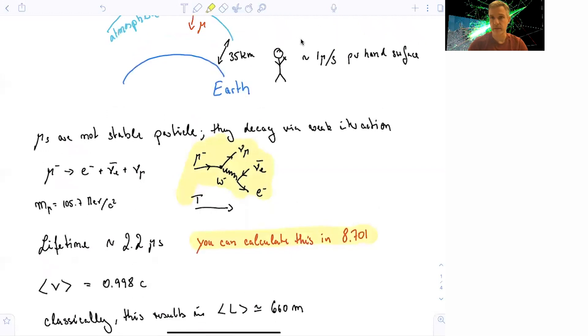Now they are produced in the upper atmosphere, and nevertheless we can find them down here on Earth. So something is not quite right.